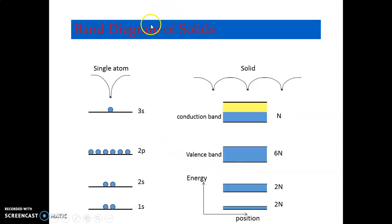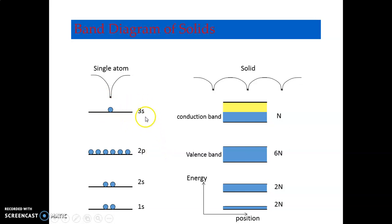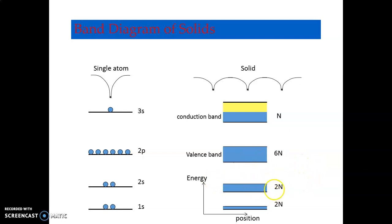The band diagram of solids: for a single atom, the electron system has energy levels such as 3s, 2p, 2s, and 1s orbitals. The conduction band and valence band are indicated, with energy positions given for each band. Metals have very low energy gap; insulators have a high energy gap; semiconductors have a small energy gap between the valence and conduction bands.